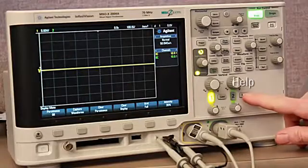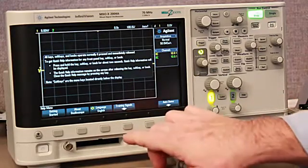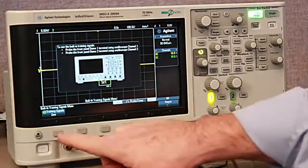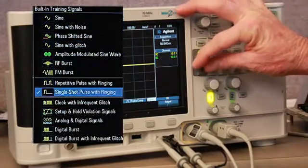They are then instructed to press the help front panel key. Then press the training signal soft key. Once students get into this menu of the scope, there is a list of signals to choose from.